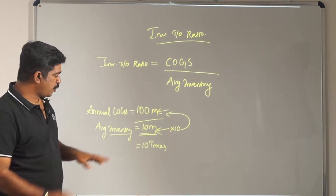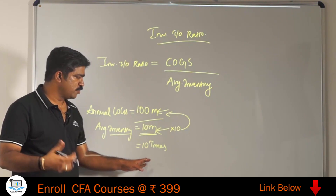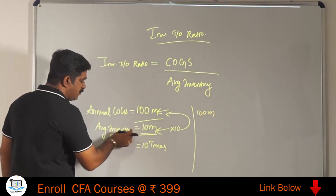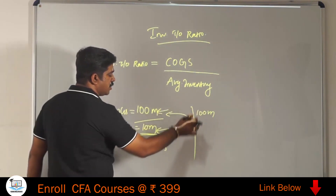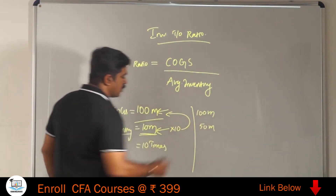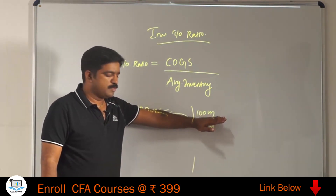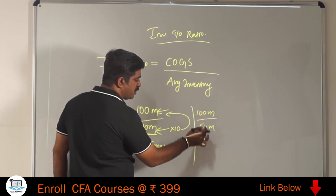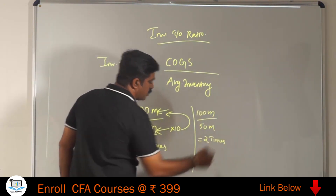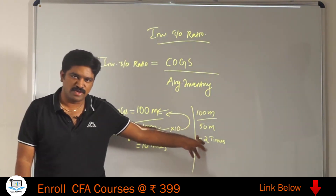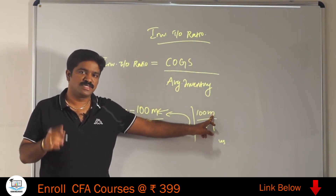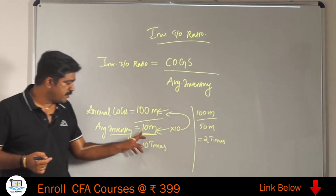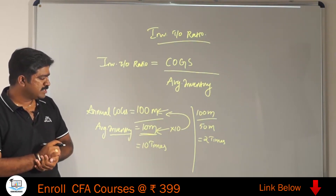Now let's take another example. The annual cost of goods sold is 100 million, but the average inventory they are keeping is 50 million. If I divide 100 million by 50 million, I get 2 times. So on average they are maintaining inventory of 50 million, and across the full year they were able to rotate the inventory only two times, compared to 10 times in the previous example.